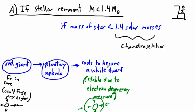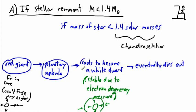This white dwarf is going to eventually cool down and just die. So it cools down to become a white dwarf and eventually just dies. It doesn't really go out with a bang — it sort of goes out with a fizzle. It cools to become a white dwarf and eventually dies out.